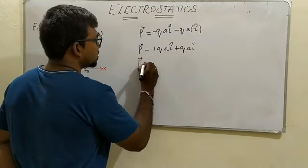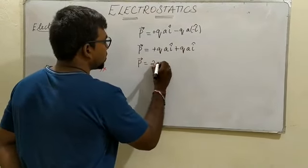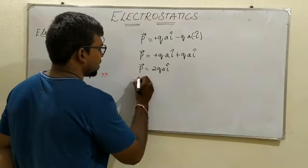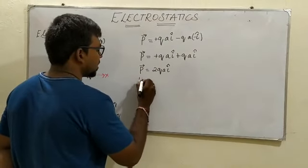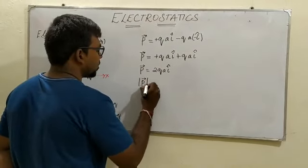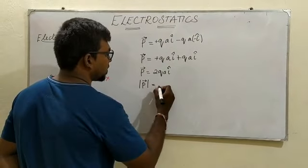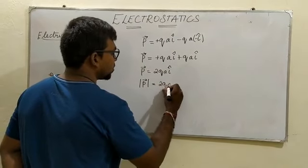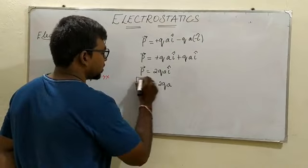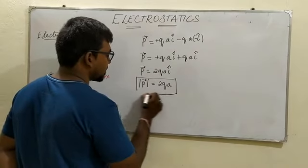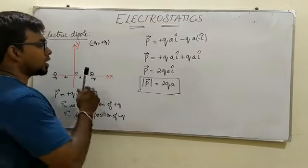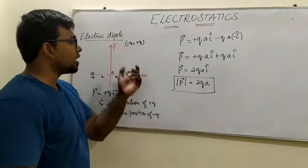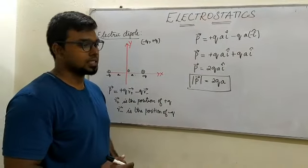So p-vector is equal to 2qa·î. Taking the magnitude alone, |p| is equal to 2qa. This expression gives the electric dipole moment of two equal and opposite charges.